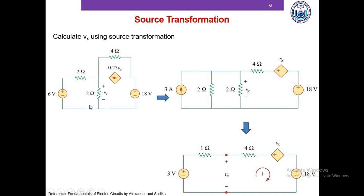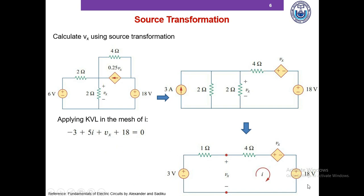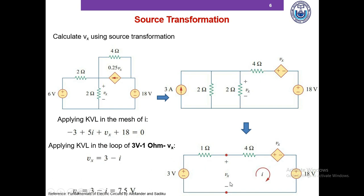If we had done mesh analysis in the original circuit, we would have had three meshes: I1, I2, I3. Here we only have one mesh. This can be solved by taking KVL of the outer loop and also taking KVL in the loop of 3 volt, 1 ohm, and Vx. Once we do that, we solve the equation and get Vx equals 7.5 volts.